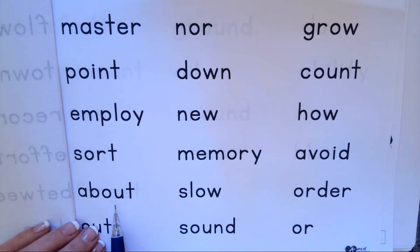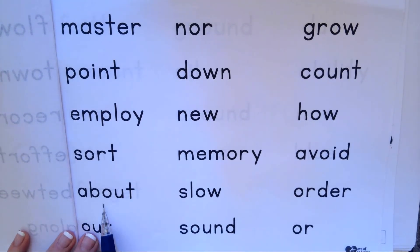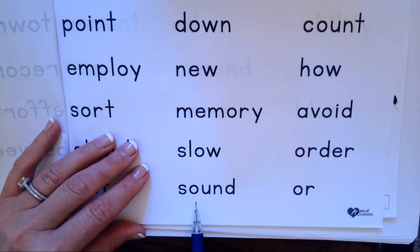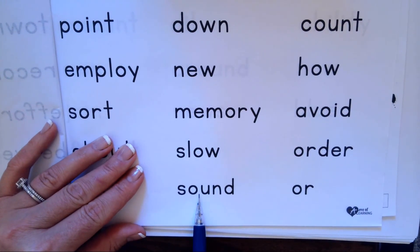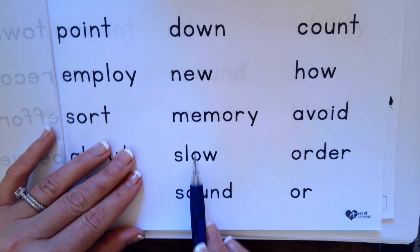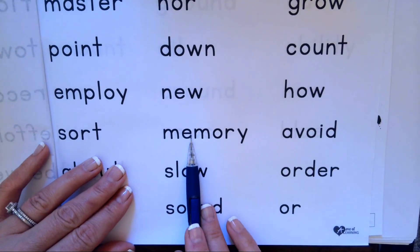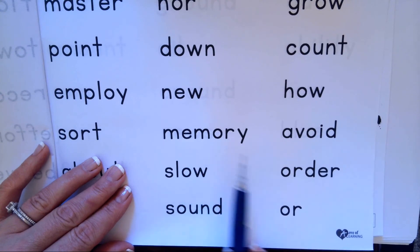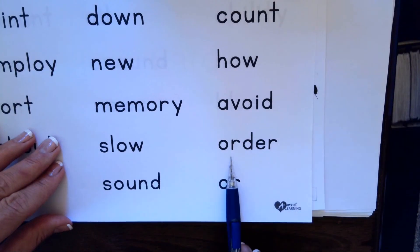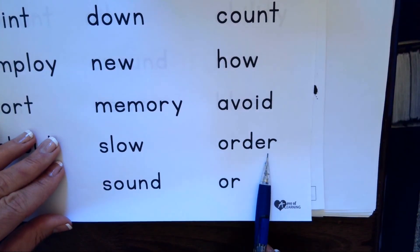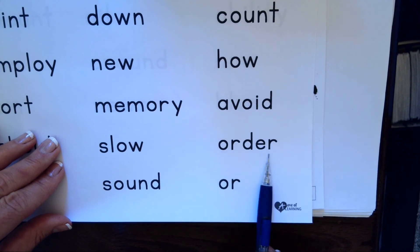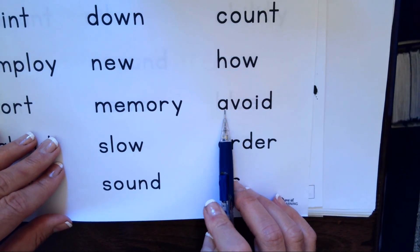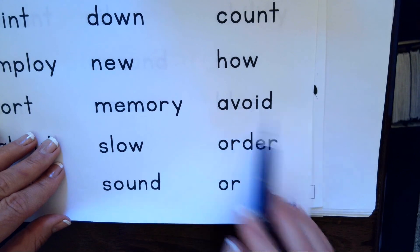O-U makes ow, A-B-O-U-T, about. O-U makes ow, S-O-U-N-D, sound. O-R makes or, M-E-M-O-R-Y, memory. O-R makes or, E-R makes ur, O-R-D-E-R, order. O-I makes oi, A-V-O-I-D, avoid.